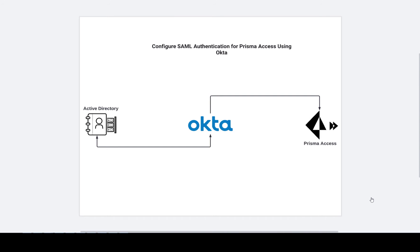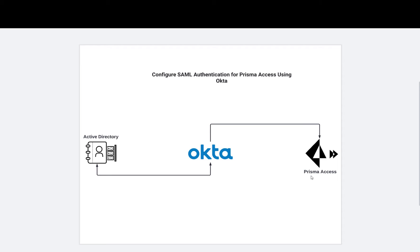We'll also cover how to integrate Okta itself with Active Directory. We start with Okta first: we create the developer account, then download the agent, install the agent in Active Directory, make the sync between Active Directory and Okta, and once that's done we move forward with Prisma Access to create a SAML service provider.